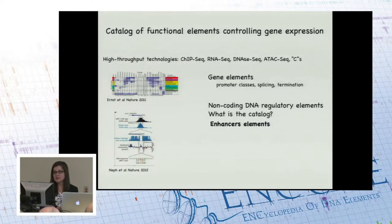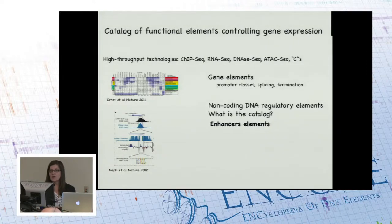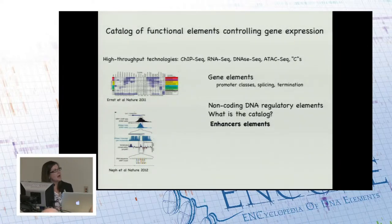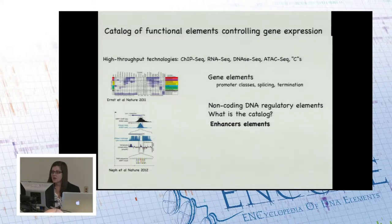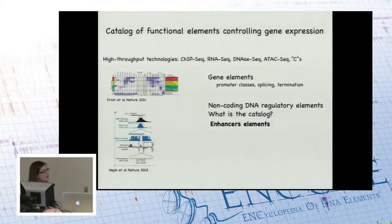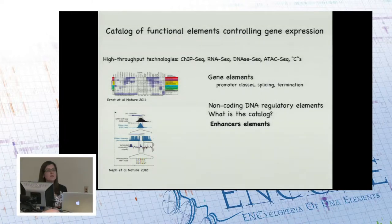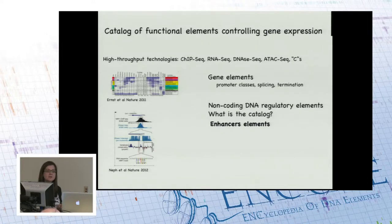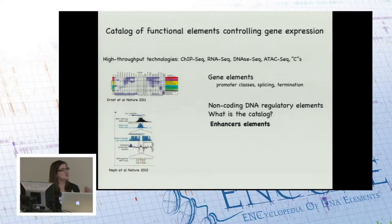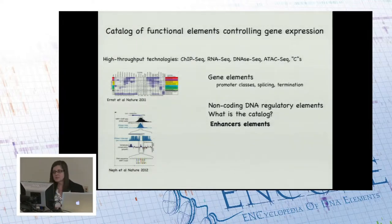Our understanding of these functional elements — how to annotate them, where they are in the genome — has advanced considerably in the last few years due to the development of high-throughput technologies: ChIP, RNA-seq, DNase, ATAC-seq, and the rest. From those data types we've been able to integrate information and come up with rudimentary definitions of things that characterize gene elements.